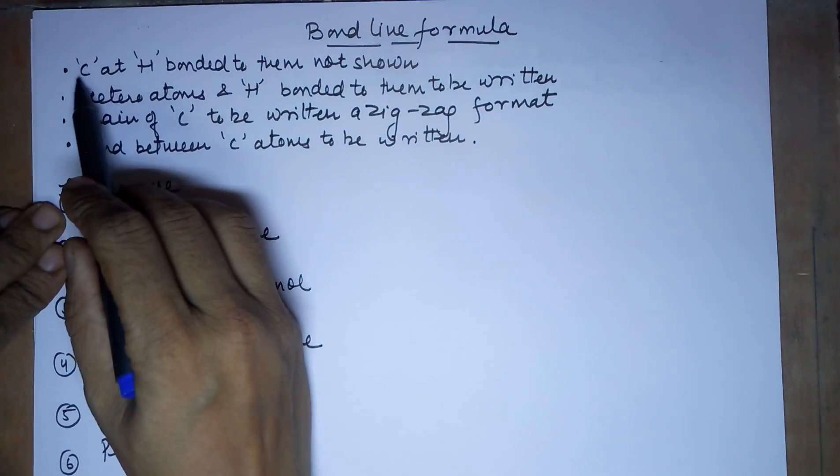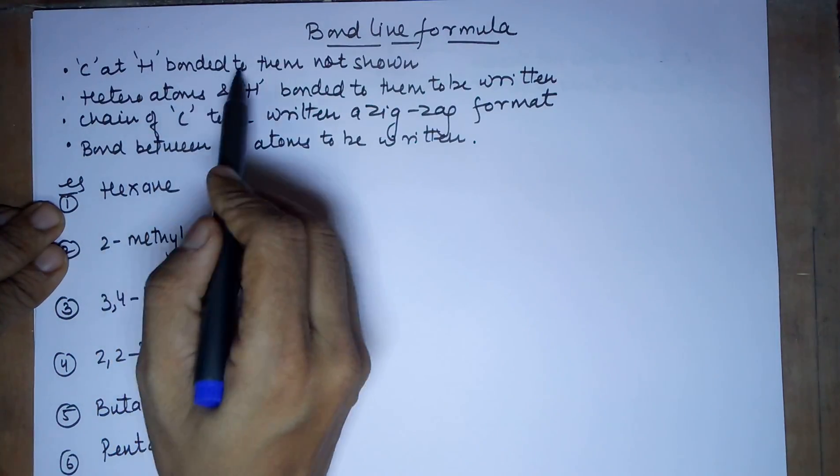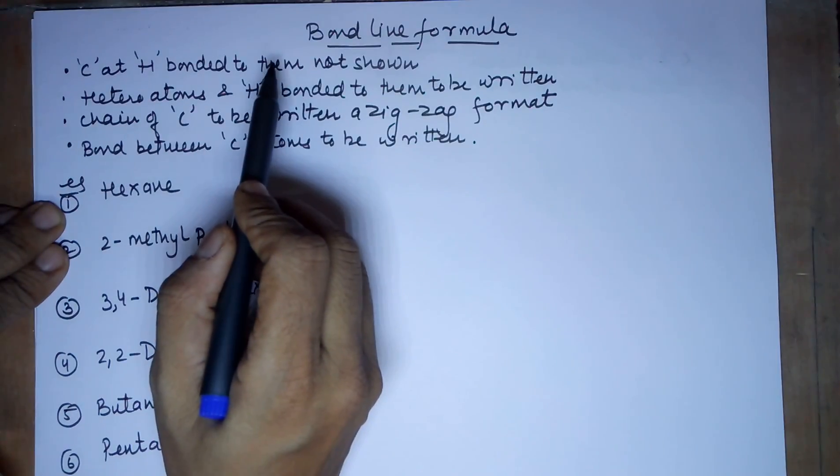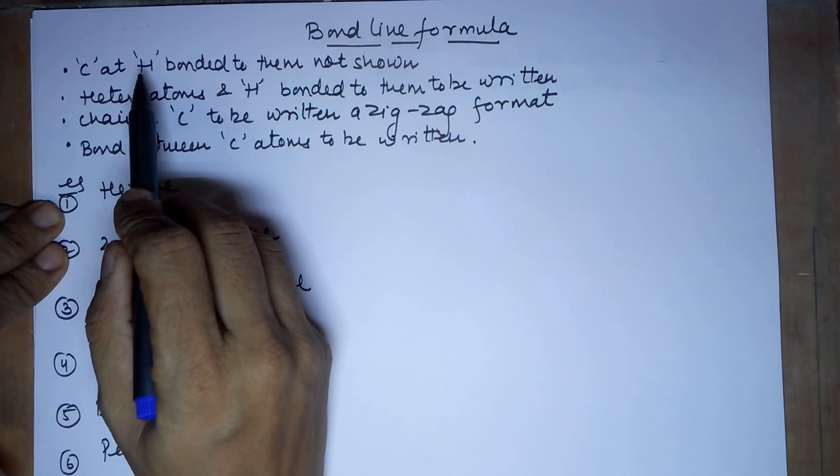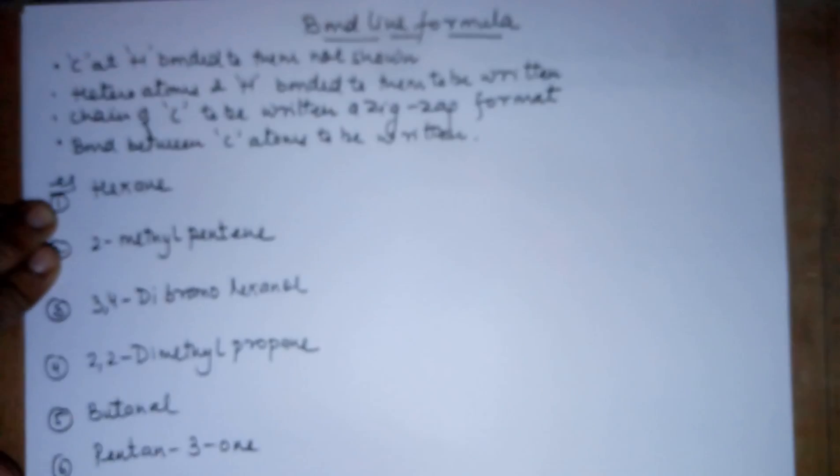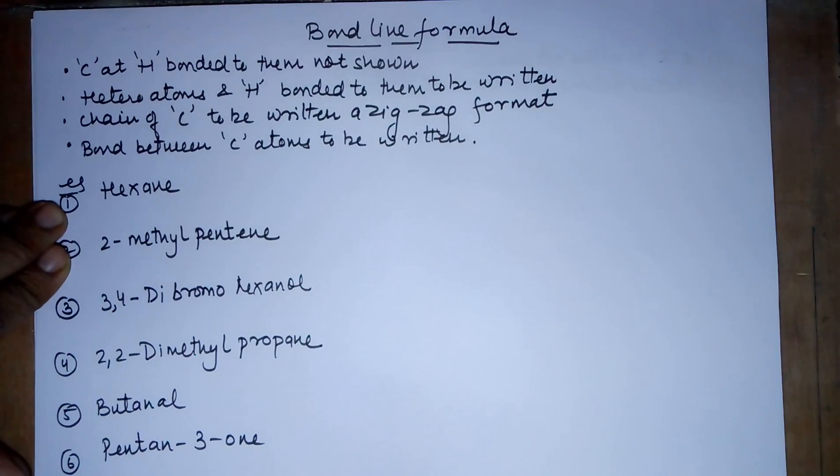The steps are carbon and hydrogens bonded to them, not to be shown, which means your bond line formula will have no C in it, neither would it have the hydrogens which are attached to those carbon atoms. So, neither will you write the carbons nor will you write the hydrogens attached to it.